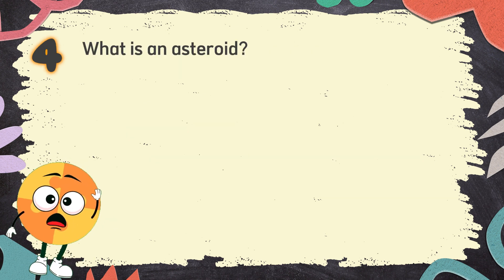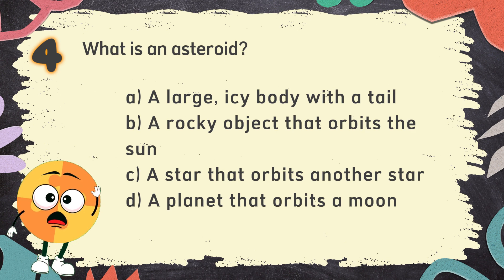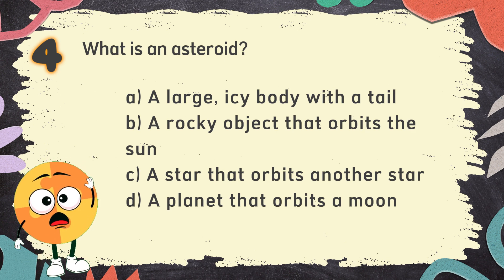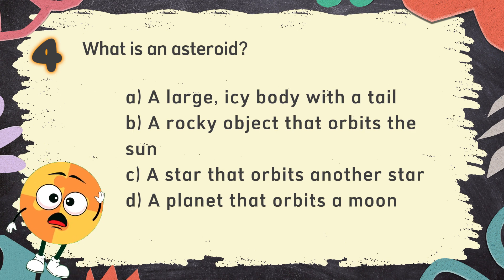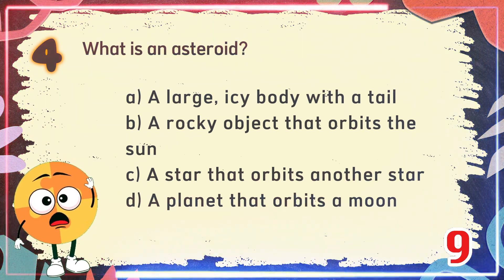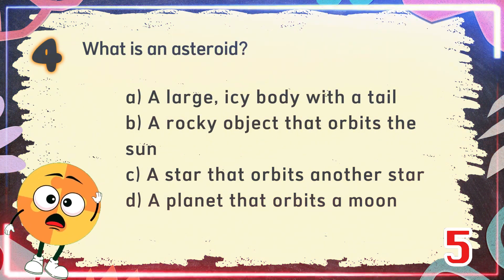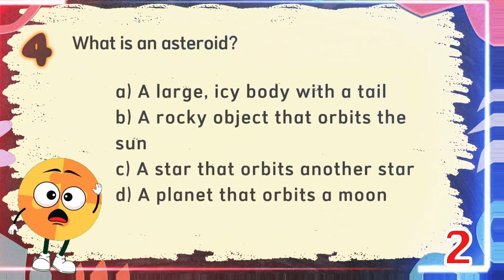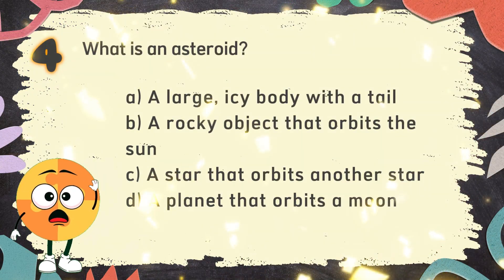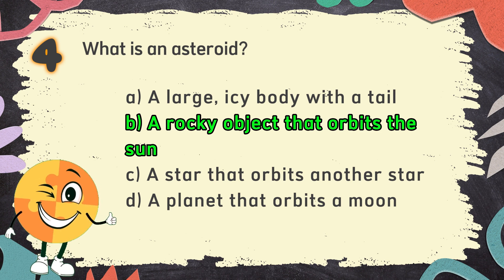Number 4. What is an asteroid? The choices are: A. A large, icy body with a tail. B. A rocky object that orbits the sun. C. A star that orbits another star. D. A planet that orbits a moon. The correct answer is B: a rocky object that orbits the sun.